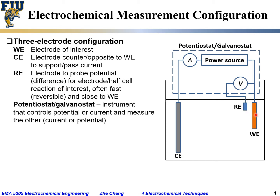You place the reference electrode very close to the working electrode so that you can probe the half-cell reaction of interest. In the three-electrode configuration, you put the amperometer between the working electrode and the counter electrode — that's also where the power supply is if you are doing electrolytic mode.